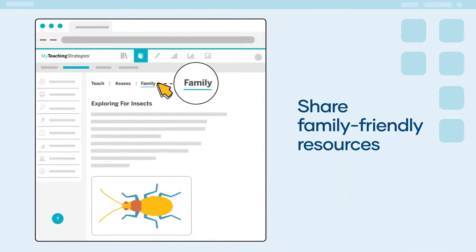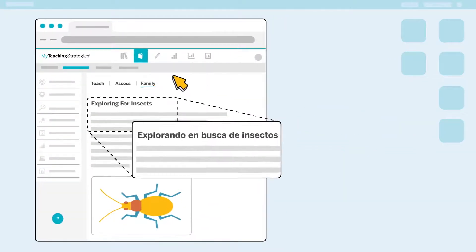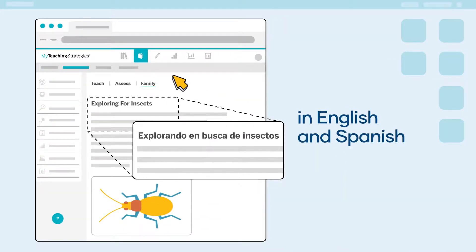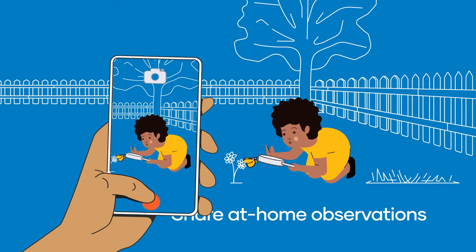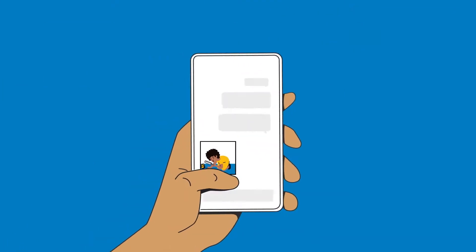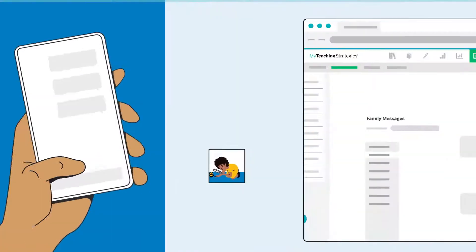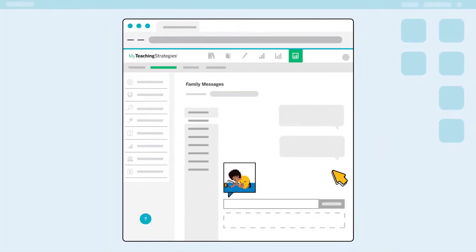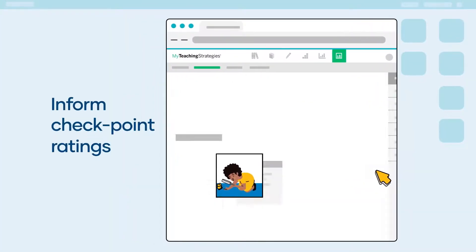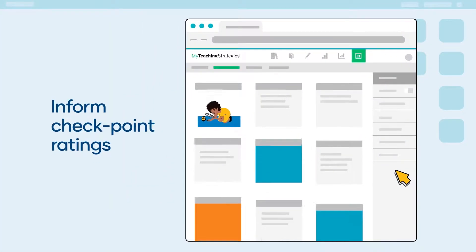Teachers can share family-friendly resources in English and Spanish to extend or continue learning at home. Families can share at-home observations with teachers, and teachers can opt to include family observations to inform checkpoint ratings.